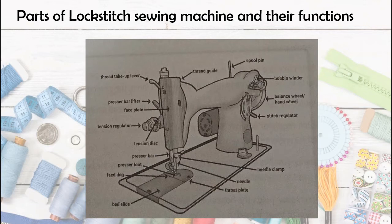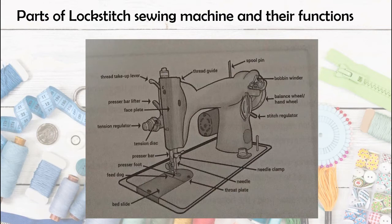Now let us have the parts of the lock stitch sewing machine and their functions. Knowledge of the basic parts of a sewing machine is important to operate it easily and produce quality output. Moreover, understanding the function of each sewing machine part helps in troubleshooting when sewing machine problems arise. Whether a sewing machine is household or industrial, its structure is almost the same. Below are the parts and their functions.